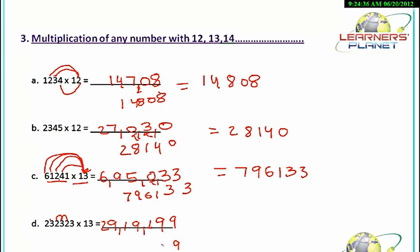In the next step, 9, 9, 1. 1 plus 9, 10. We'll put 0 over here and 1 will be carried. 1 and 1, 2. 1 and 9, 10. 1 will be carried. And 2 and 1, 3. So the answer to the problem is 3,020,199. Isn't it very simple?